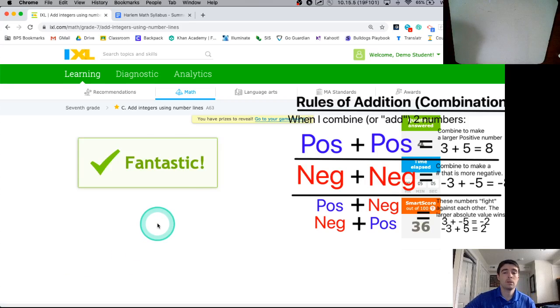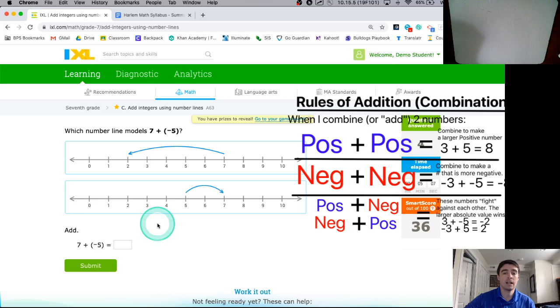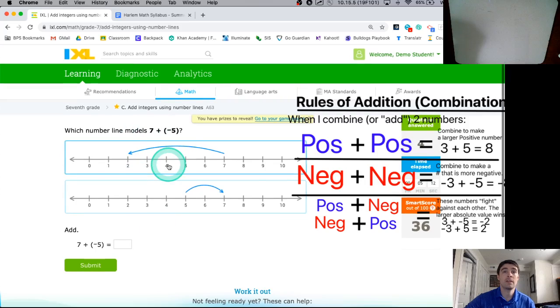I'm going to show one more example. And then I think you all kind of have the idea here. Hopefully, you can see which number line models the situation. And then that number line can help you do the math, see what answer we get.